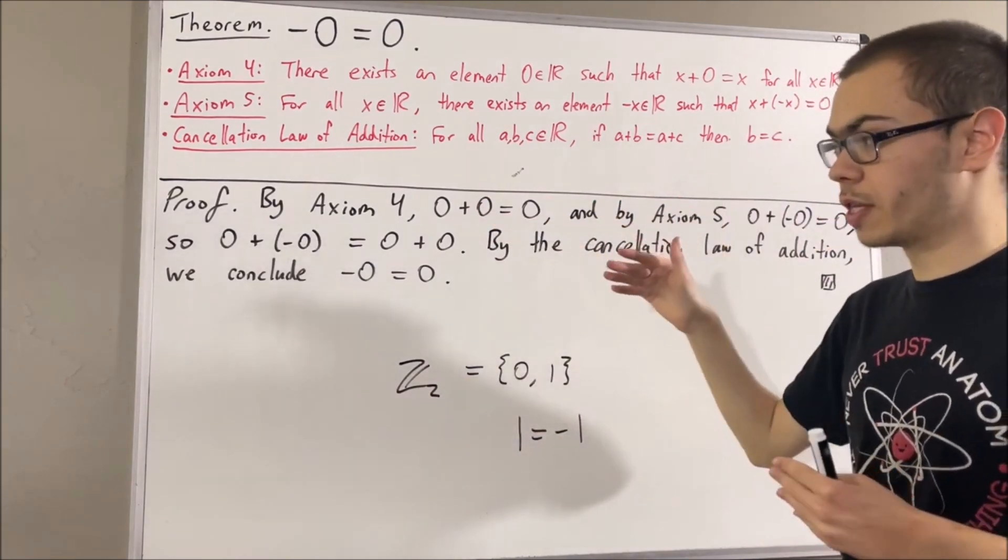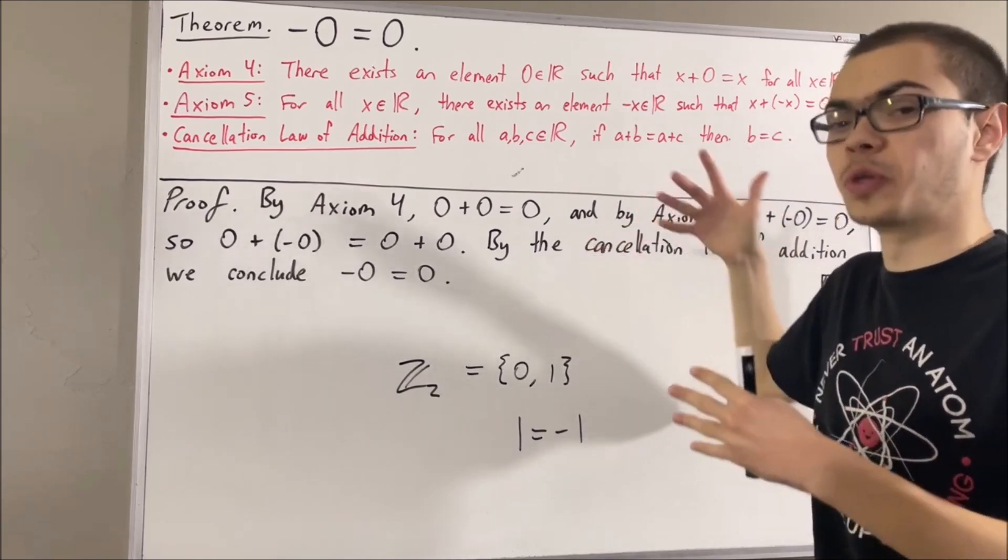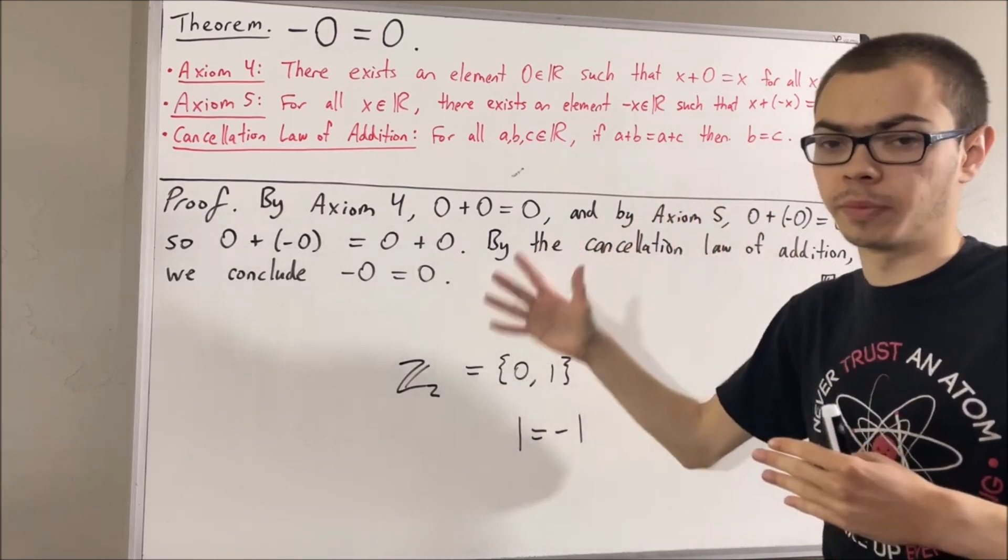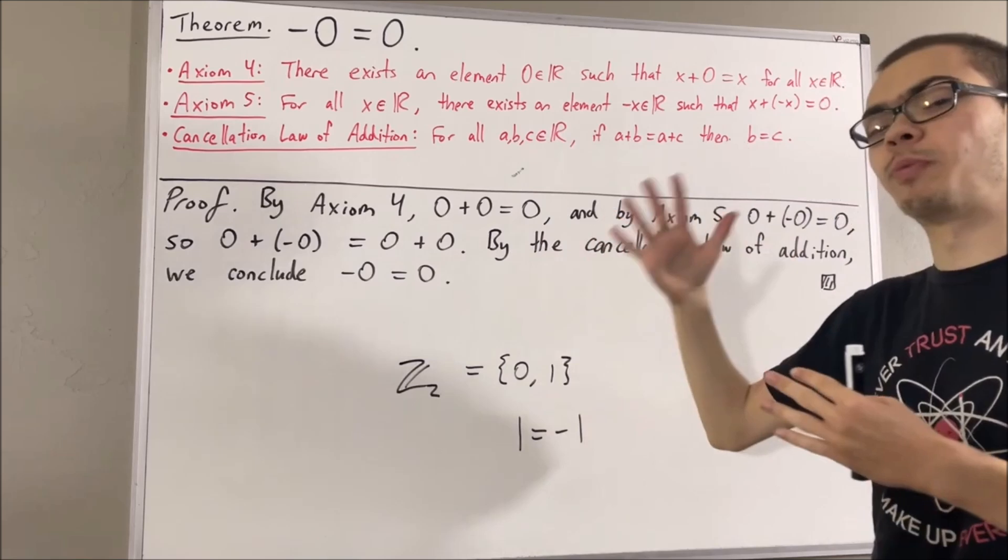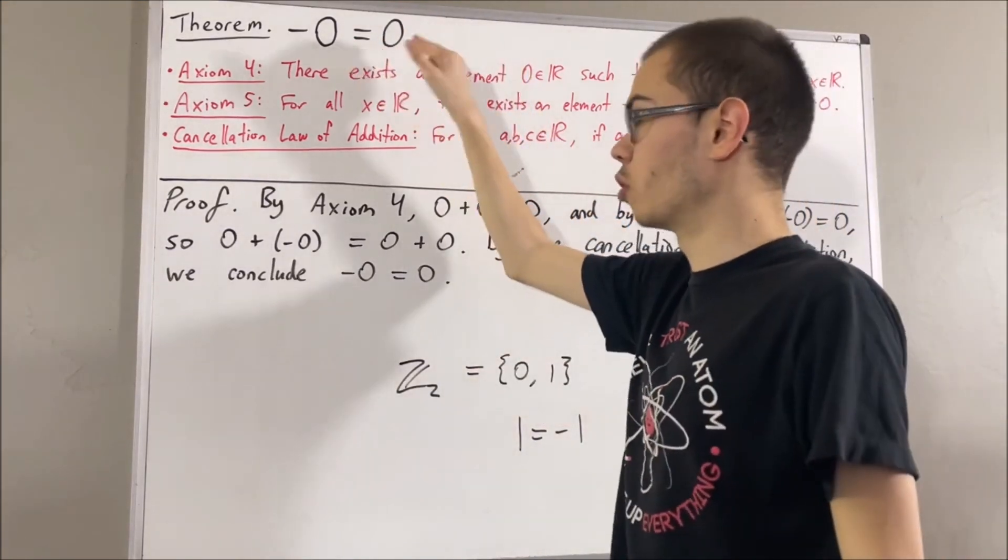Once we start working with axioms 8 and 9, the order axioms, that will no longer be the case, because we will be able to prove that zero is the only real number with this property.